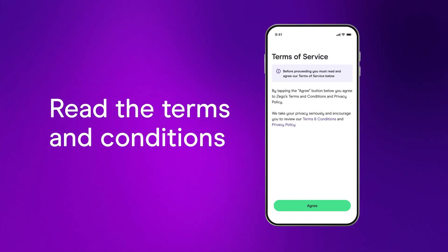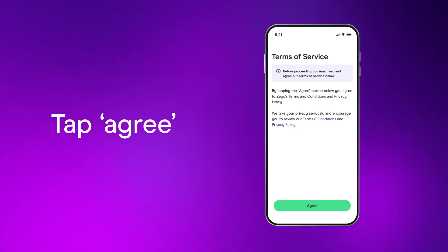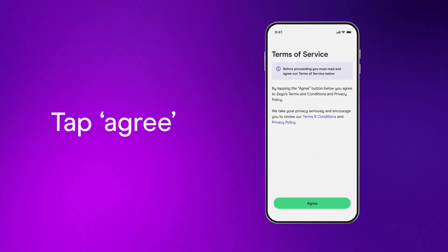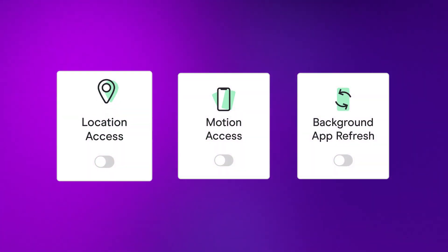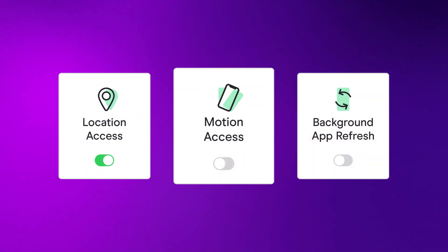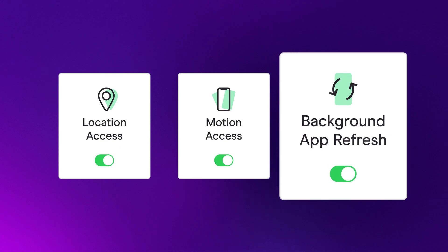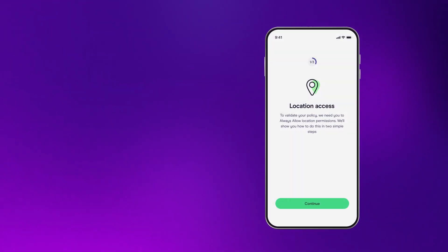Make sure you read the terms and conditions before tapping agree. We'll need to access a few of your smartphone's features to allow the app to work properly. These are your location and motion access and your background app refresh. We'll walk you through the process now.